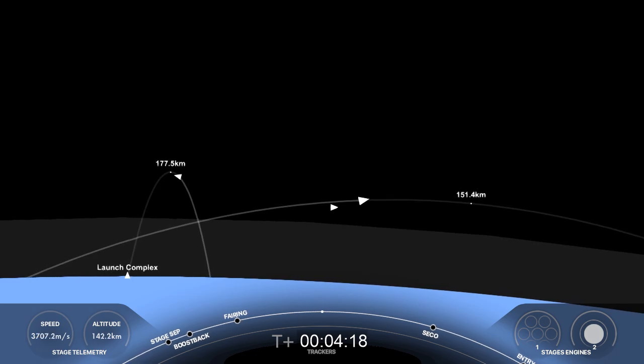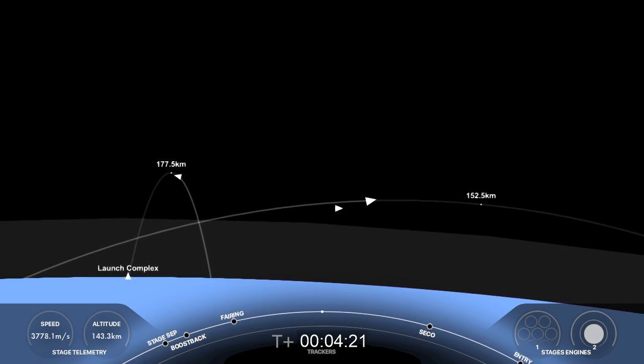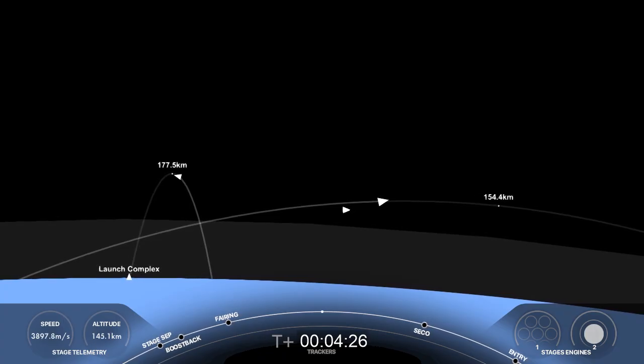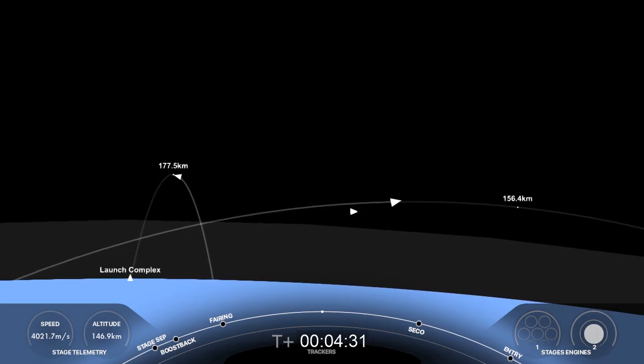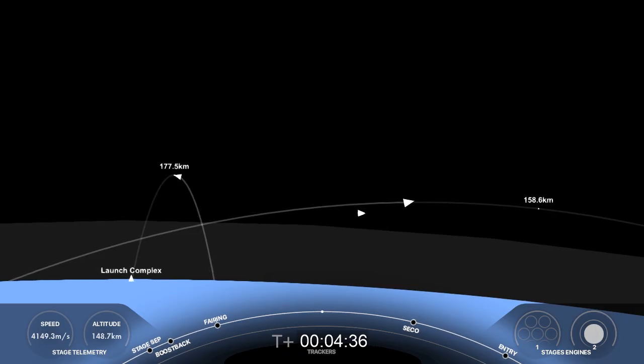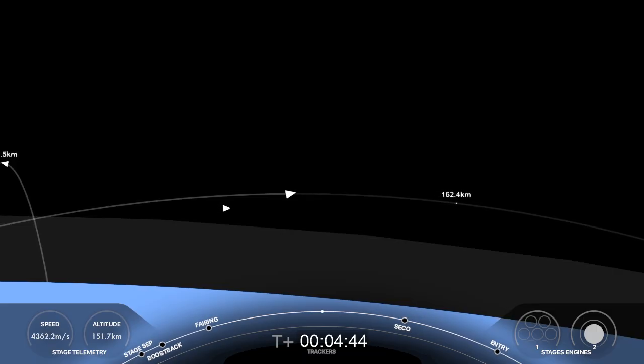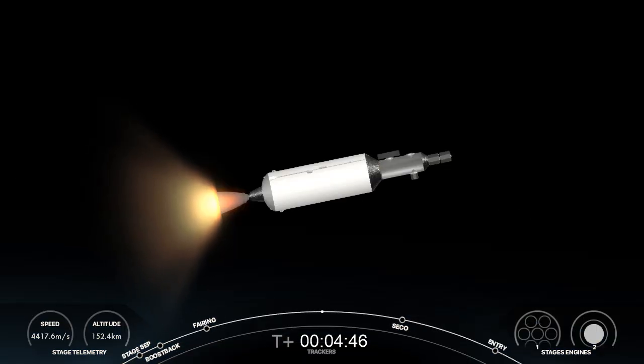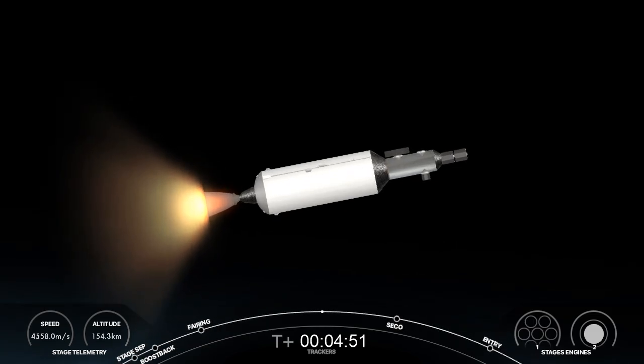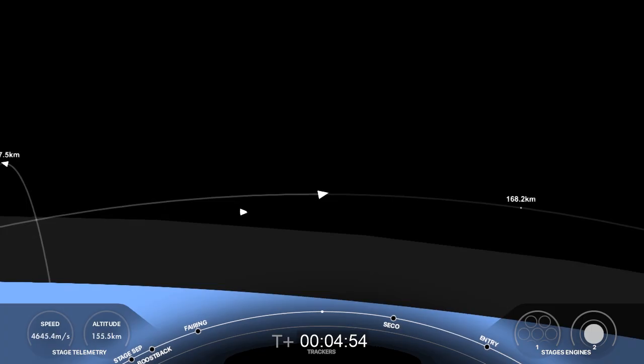Now the first stage that is supporting today's mission is flying for its 16th time. It previously supported NASA Crew-7, CRS-29, PACE, Transporter-10, Transporter-13, EarthCare, NROL-186, and eight separate Starlink missions. But while this booster is on its 16th trip to space, we're working towards qualifying our fleet of Falcon boosters and fairings to support 40 missions each. And for those following along, we're currently at 29 flights of a single Falcon booster, which is absolutely phenomenal. Increasing Falcon's flight count provides valuable information on repeated reuse, which is a critical element for making life multi-planetary.